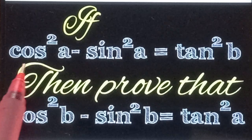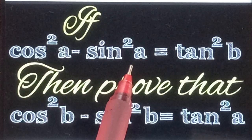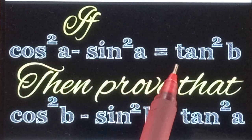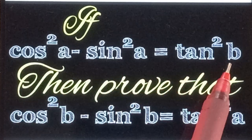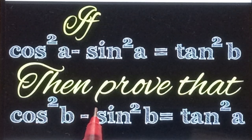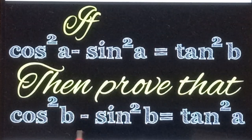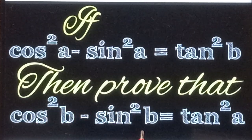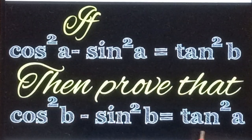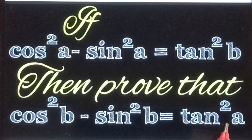If cos²a minus sin²a equals tan²b, then prove that cos²b minus sin²b equals tan²a.